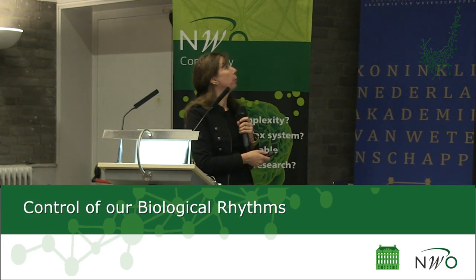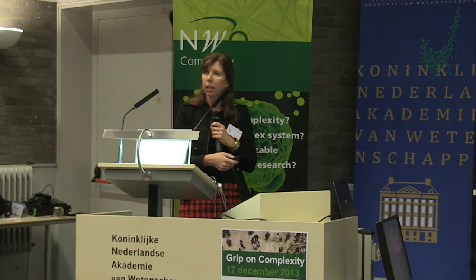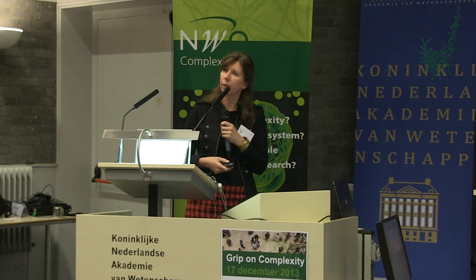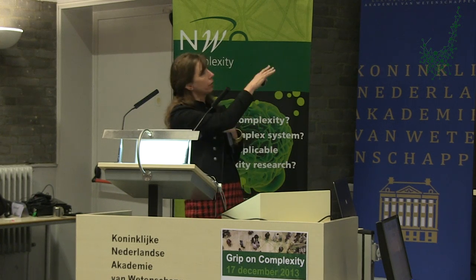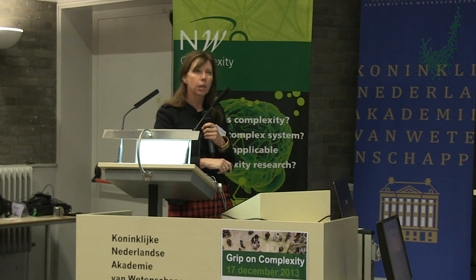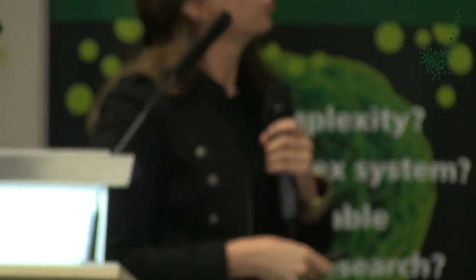I'm very happy to talk here today about biological clocks. The title of my talk is 'Control of Our Biological Rhythms.' This picture illustrates that at the very beginning of evolution, very simple organisms developed. They lived at the surface of the sea and had to protect themselves against dangerous UV radiation. In order to escape, they had to go to deeper sea levels, to anticipate the rise of the Sun. This required the development of an endogenous biological clock.